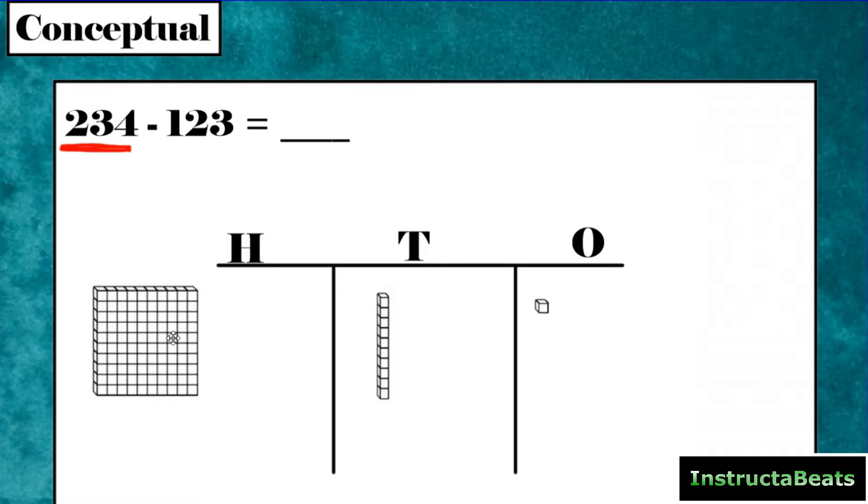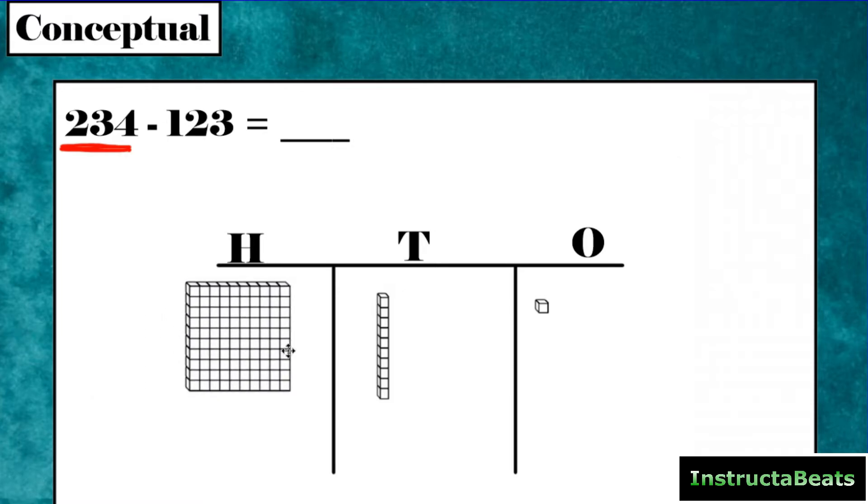And when you are done, you see that you have 100, 1 10, and 1 1 left. So your answer is 111. A 1 in your 100s place, a 1 in your 10s place, and a 1 in your 1s place. That's what's happening when we are subtracting with base 10 blocks.